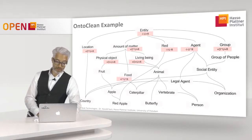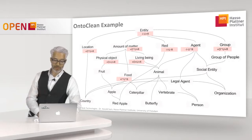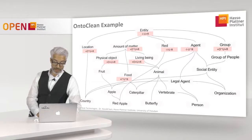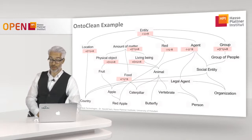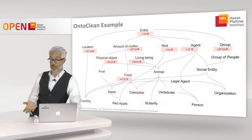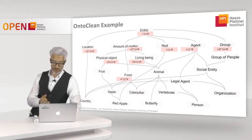For 'food': it simply inherits the identity criterion from amount of matter — for example, 100 grams of zucchini is an amount of food. It is not necessarily considered a whole, similar to amount of matter — anti-unity. And if you consider something no longer as food, for example if it rots, it is still a physical object, so the entity stays but it is no longer food — therefore anti-rigid.